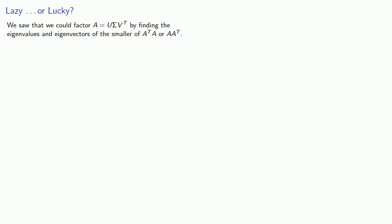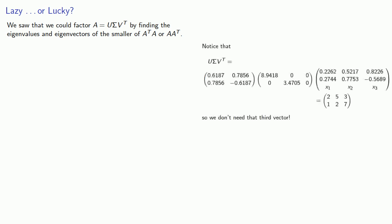So we thought that we could factor A as U Σ V^T by finding the eigenvalues and eigenvectors of the smaller of A^T A or AA^T. This worked because the additional eigenvectors were multiplied by the zeros of Σ, provided that Σ had more columns than rows. But what if it didn't?